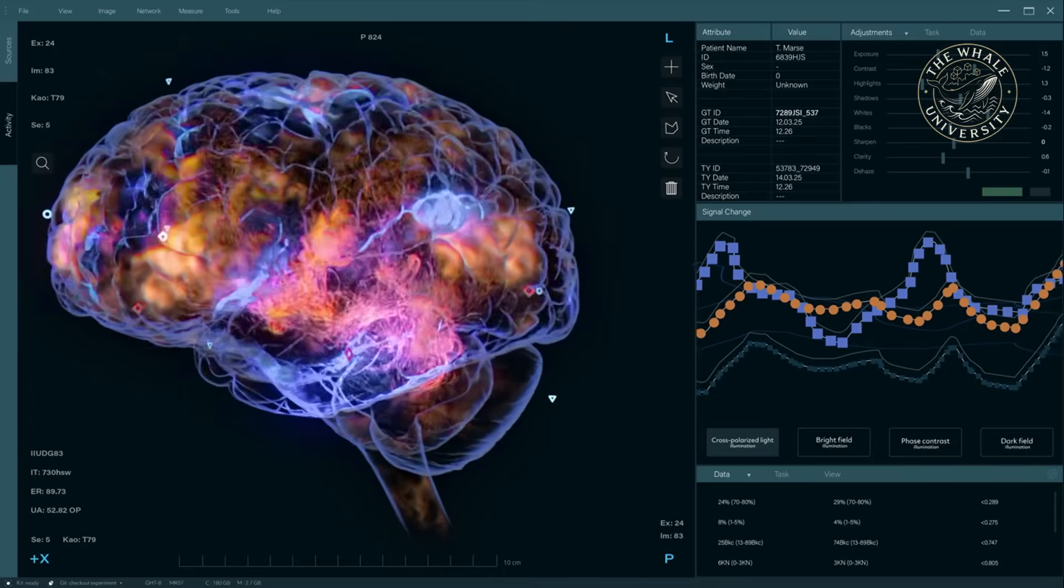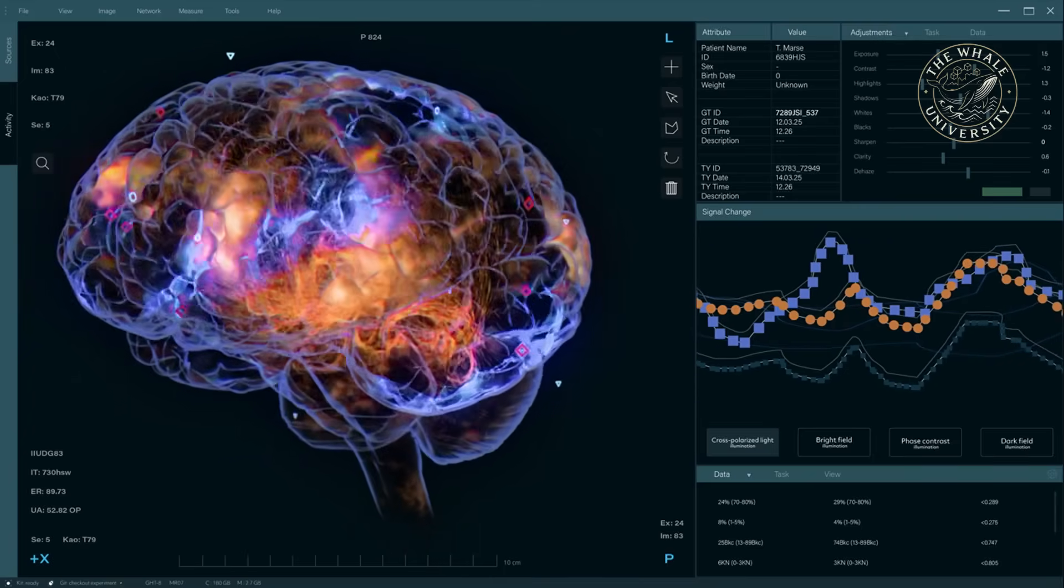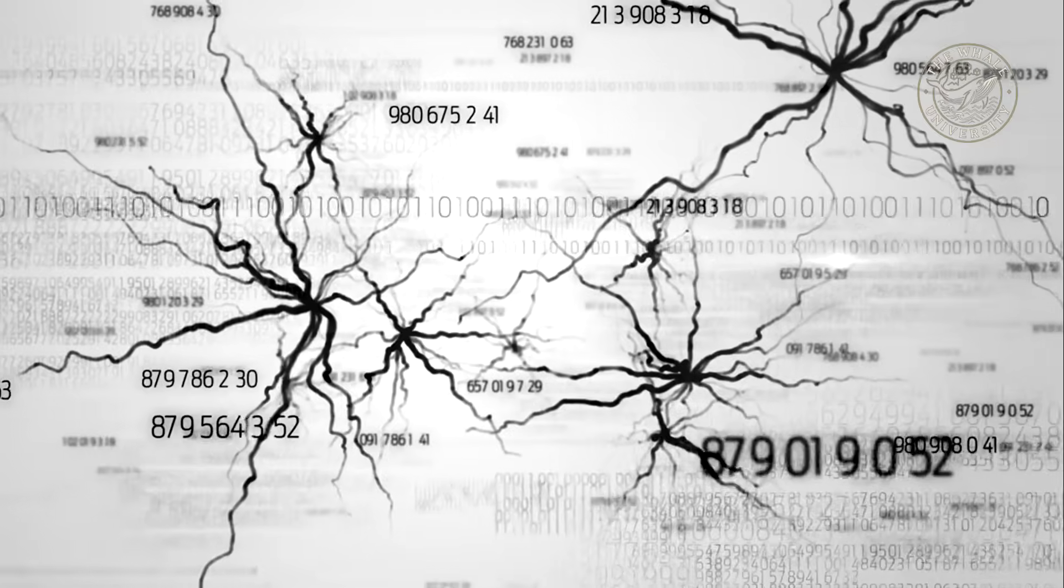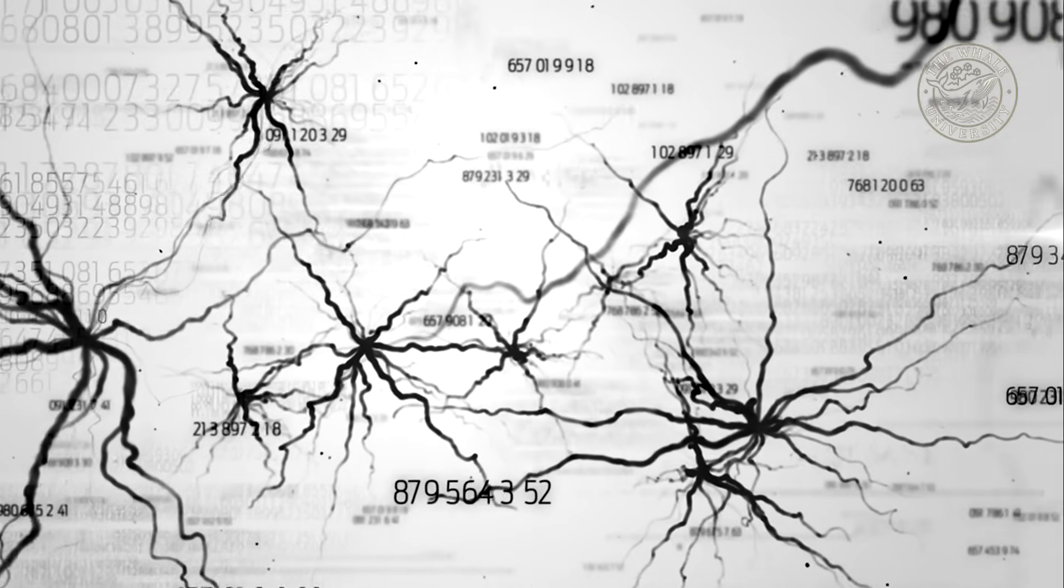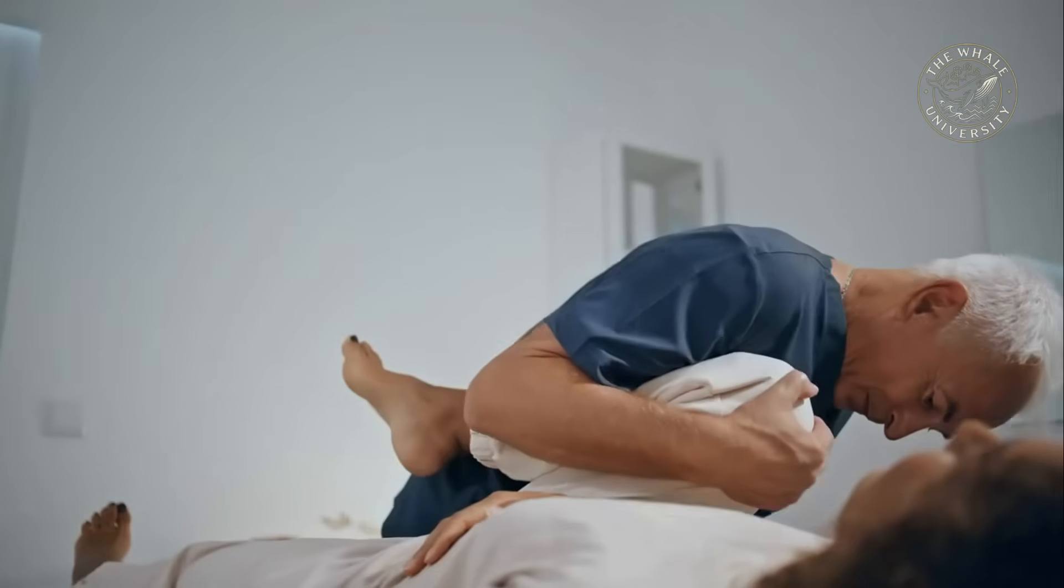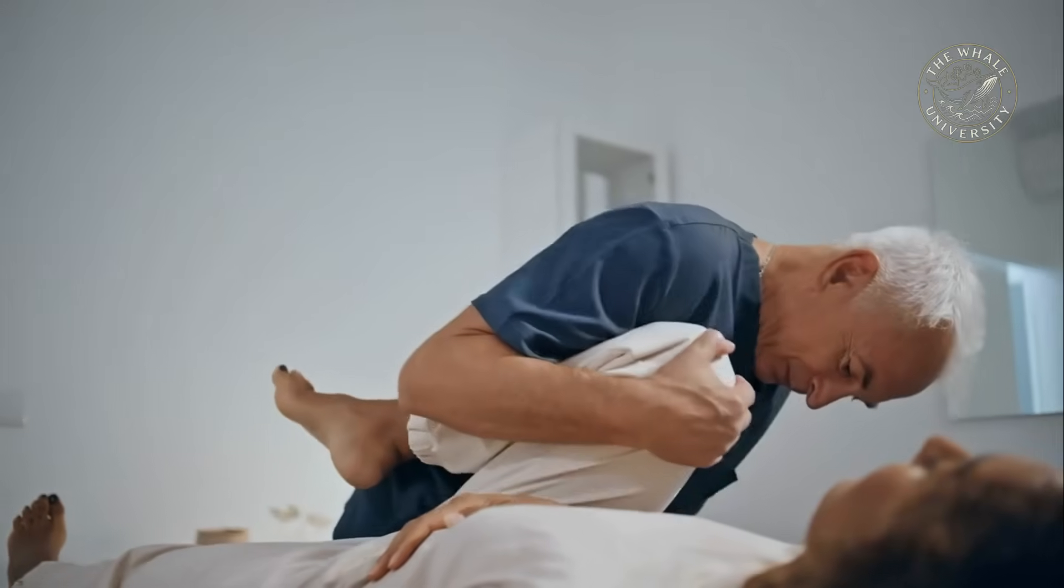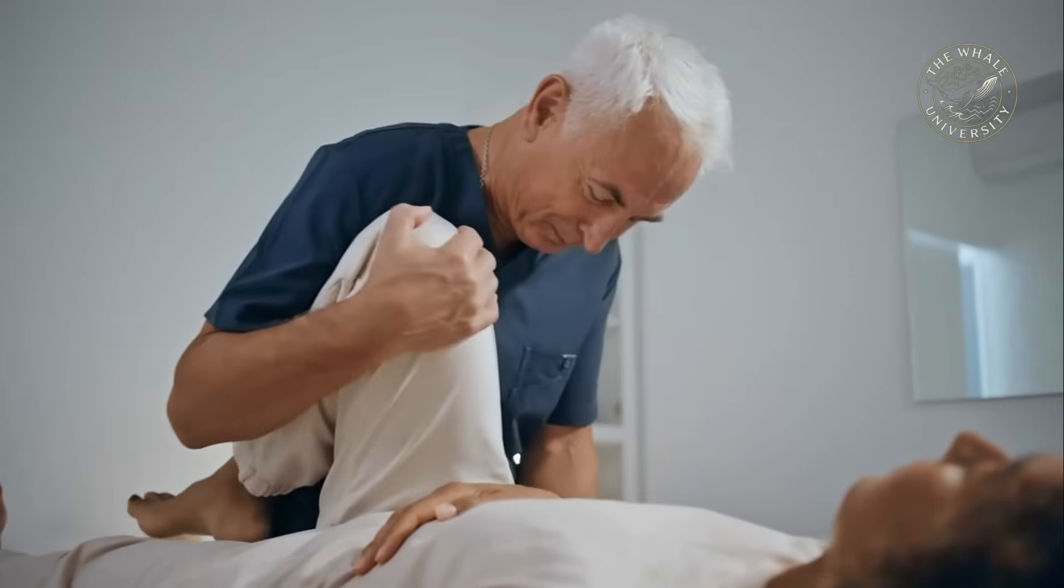These brain-computer interfaces, or BCIs, are the first rung on the ladder to mind uploading. They prove that we can, at least in a limited way, read and interpret the electrical signals of the brain. Current technology allows people with paralysis to move robotic limbs or type on a screen just by thinking.